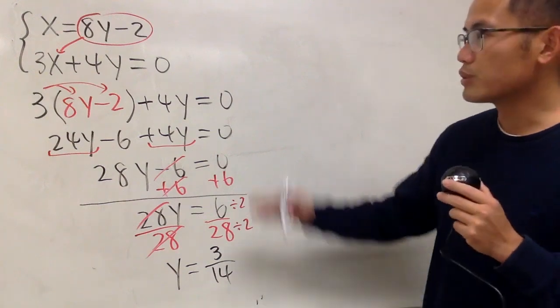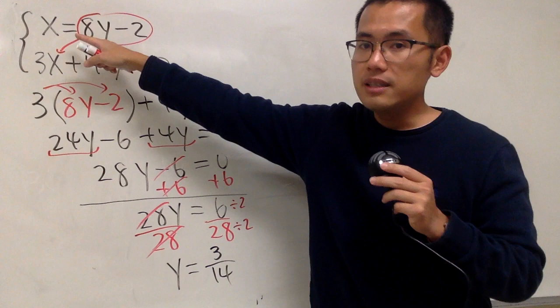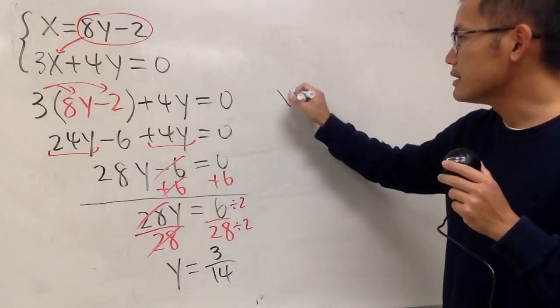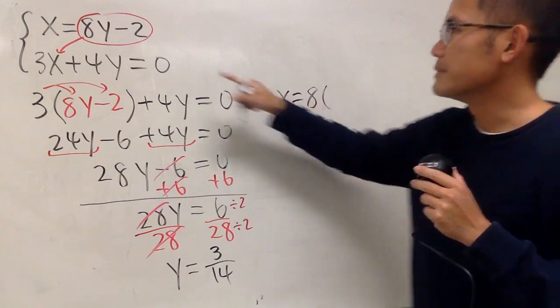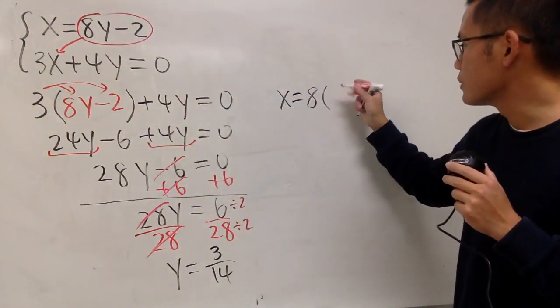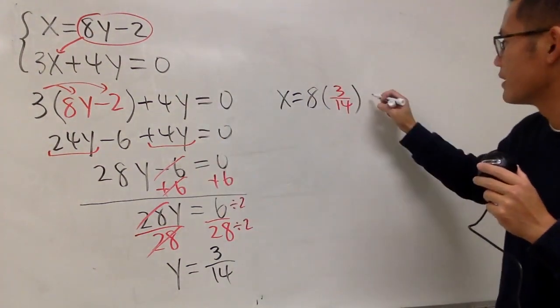However, we are not done yet, because we also have to find out what x is. And we can look at the first equation. It's easier this way, because x is by itself already. We know x is equal to 8 times y. But we know y is equal to 3 over 14. So, I'll just write that down. And then, I will just have to minus 2 after that.